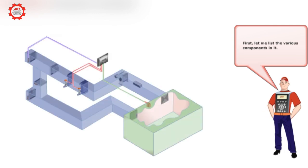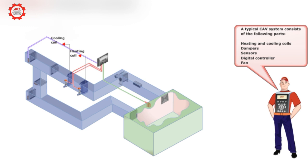First, let me list the various components in it. A typical constant air volume system consists of the following parts: heating and cooling coils, dampers, sensors, digital controller, fan.